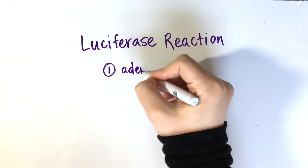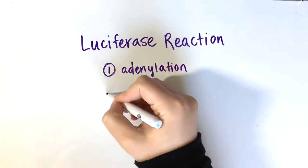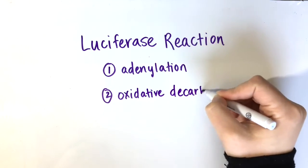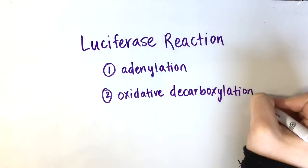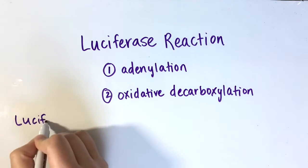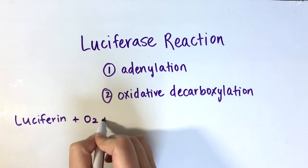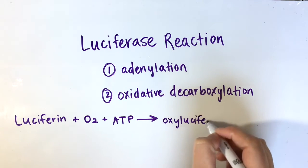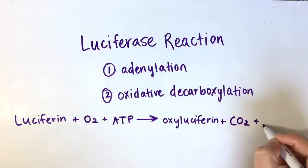The reaction of luciferase takes place in two general steps. First is the adenylation of luciferin using ATP, and second is an oxidative decarboxylation of the luciferol adenylate to form an electronically excited oxyluciferin. When the excited oxyluciferin moves back to the ground state, energy is released in the form of light.